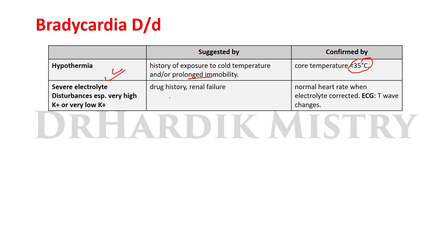When bradycardia occurs with a drug history or renal failure, and the heart rate returns to normal when the electrolyte balance is corrected, along with T-wave changes on ECG, then this bradycardia is due to severe electrolyte disturbances — especially very high or very low potassium levels, i.e., hyperkalemia or hypokalemia. That is all about the differential diagnosis of bradycardia.